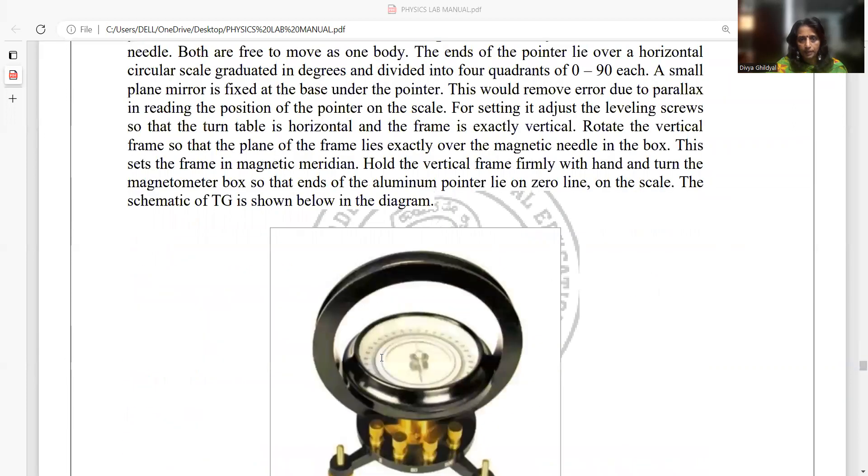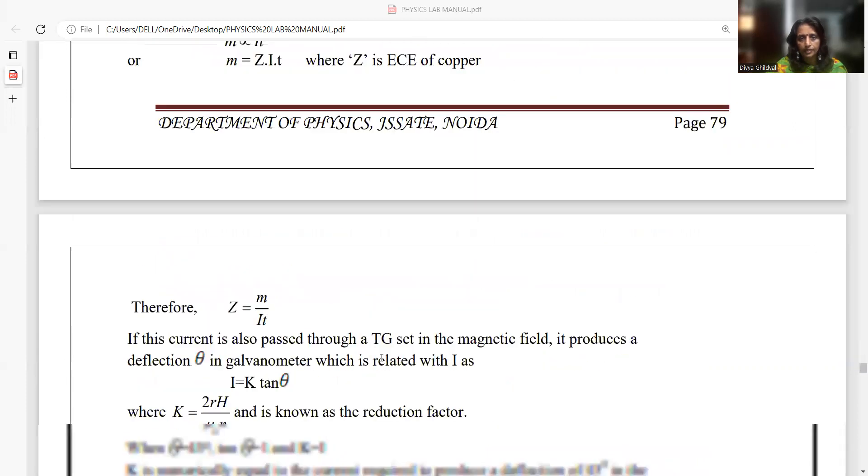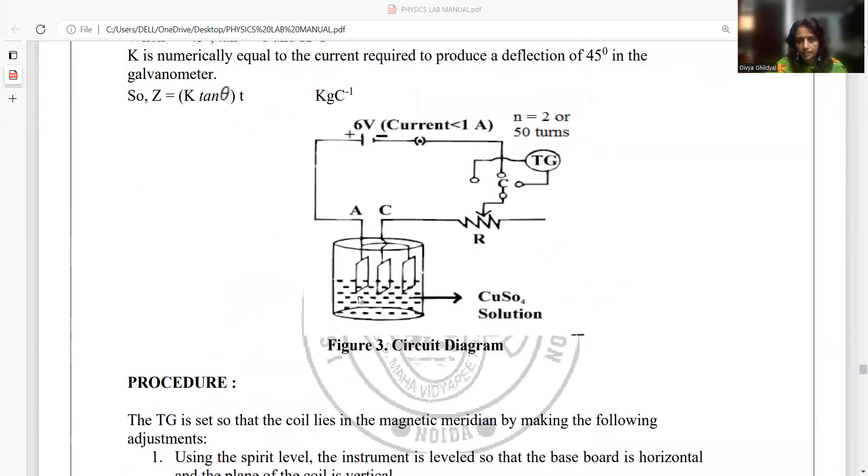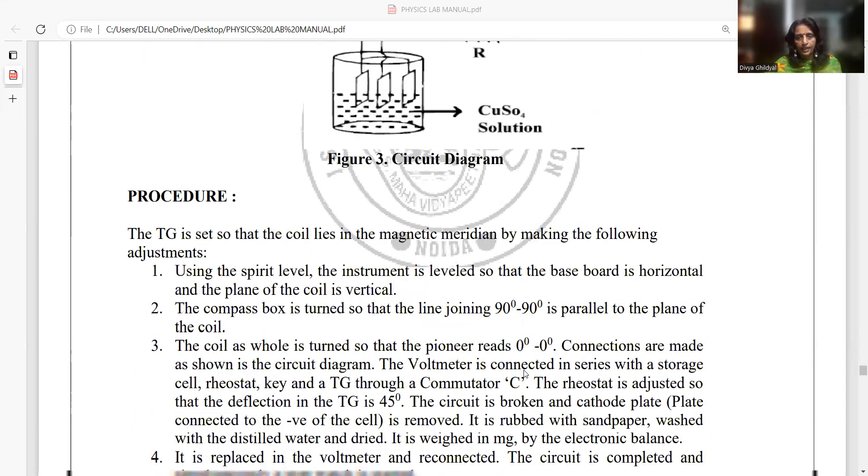My experimental setup diagram will consist of a circuit diagram which consists of copper sulfate solution with anode and cathode, a tangent galvanometer, commutator key setup, ammeter in series and a rheostat.